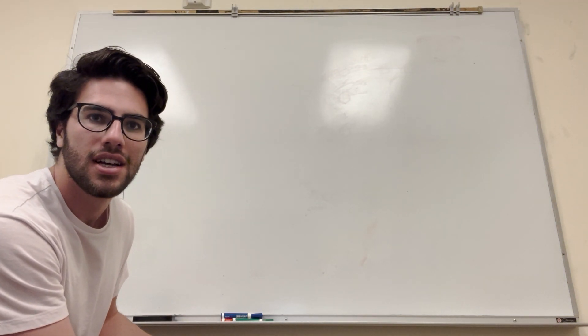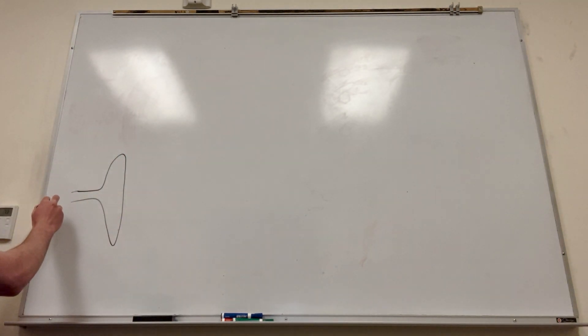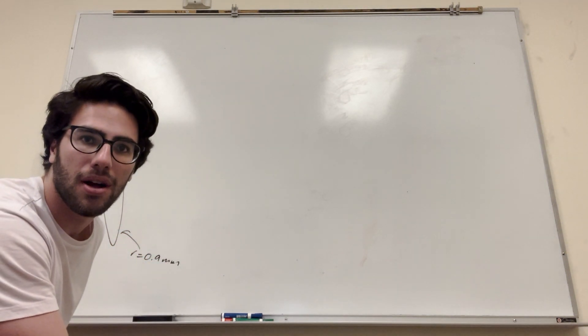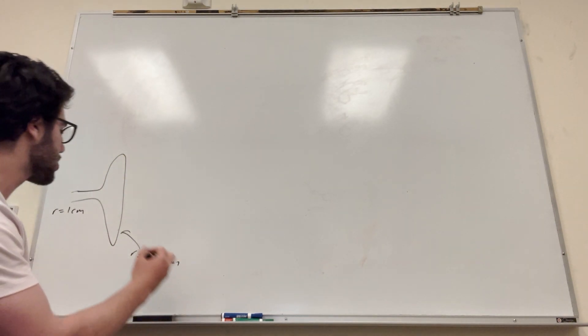So we know that the radius is one centimeter here, and then we know that the radius for each one of these is 0.9 millimeters. It's a very small radius. And we know that there's 20 openings.